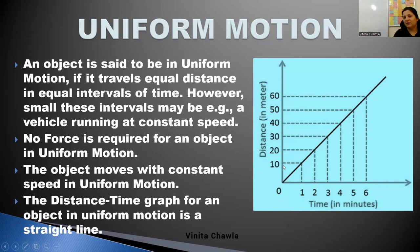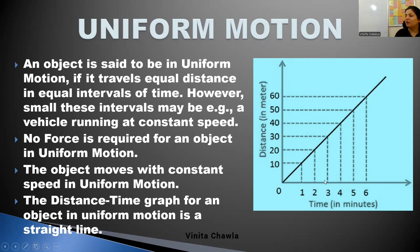In this graph, you can observe that in the first time interval — one minute — the object has covered a distance of 10 meters. In another one minute, again it has covered a distance of 10 meters. In the third minute, it has covered 10 meters again. So every time, the object is covering a distance of 10 meters in one minute. So its speed is 10 meters per minute.